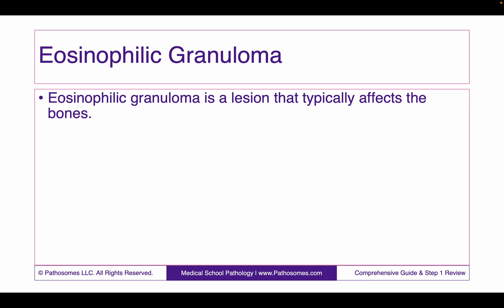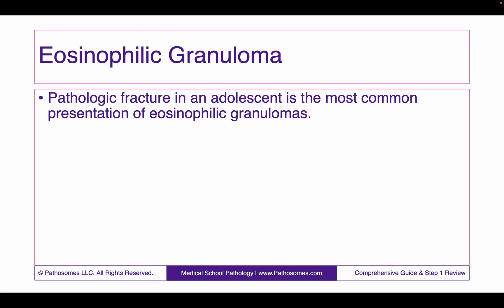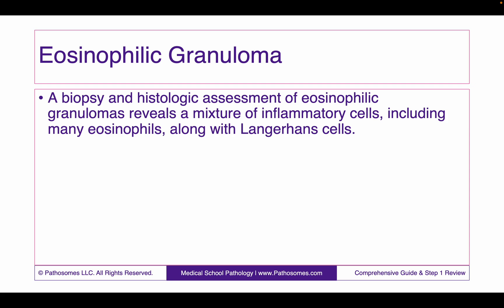Now let's talk about eosinophilic granulomas. An eosinophilic granuloma is a lesion that typically affects the bones. Eosinophilic granulomas are caused by an excess and overgrowth of Langerhans cells. Keep in mind that eosinophilic granulomas are classically associated with Churg-Strauss syndrome. With regards to eosinophilic granulomas, a pathologic fracture in an adolescent is the most common presentation. A biopsy and histologic assessment reveals a mixture of inflammatory cells, including many eosinophils, along with Langerhans cells.